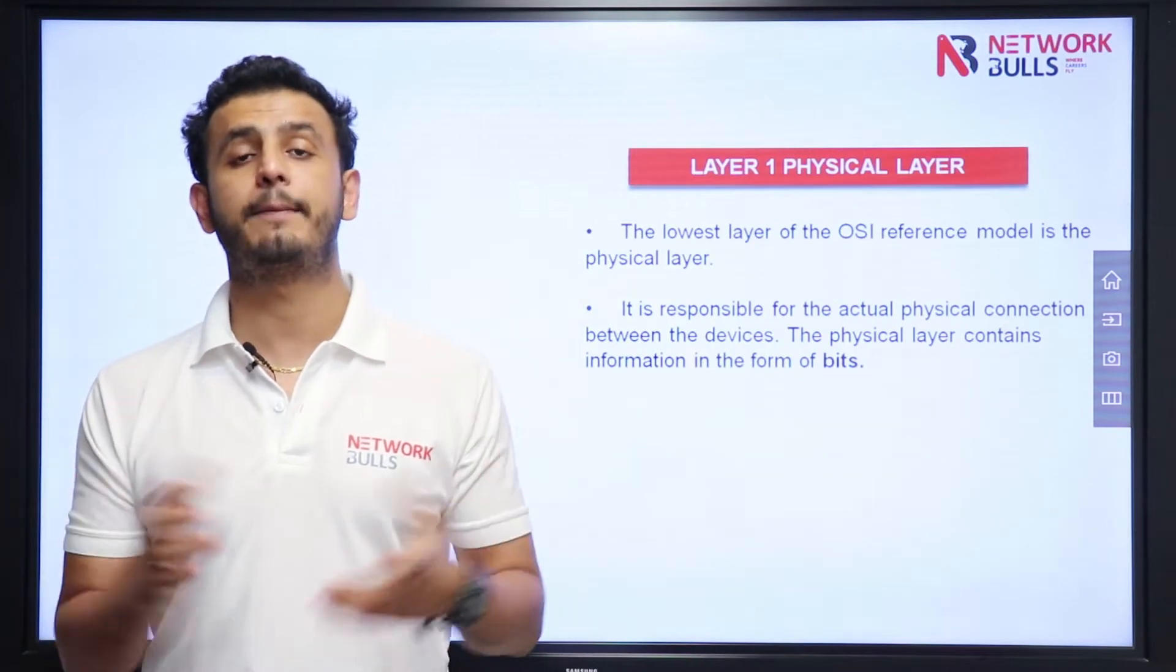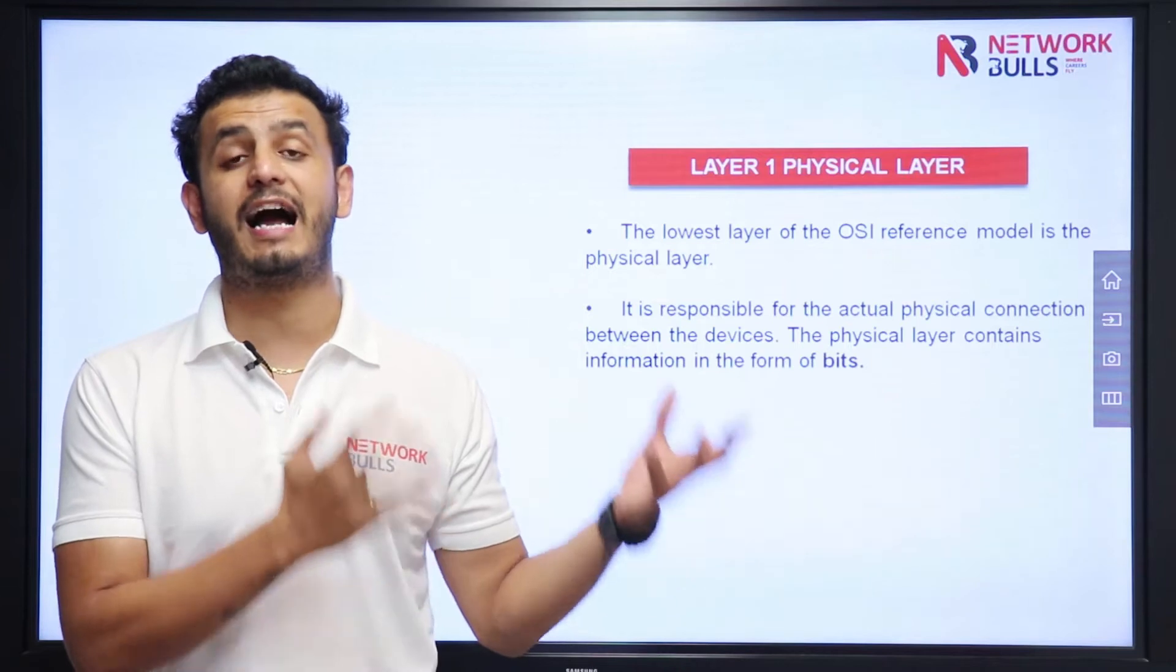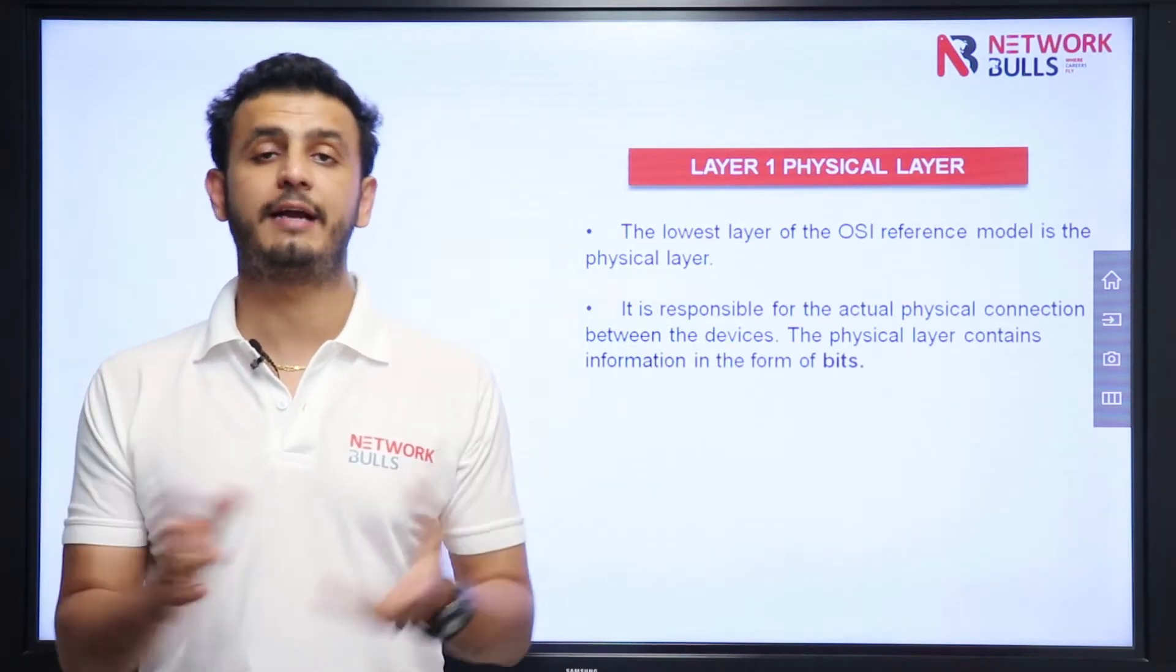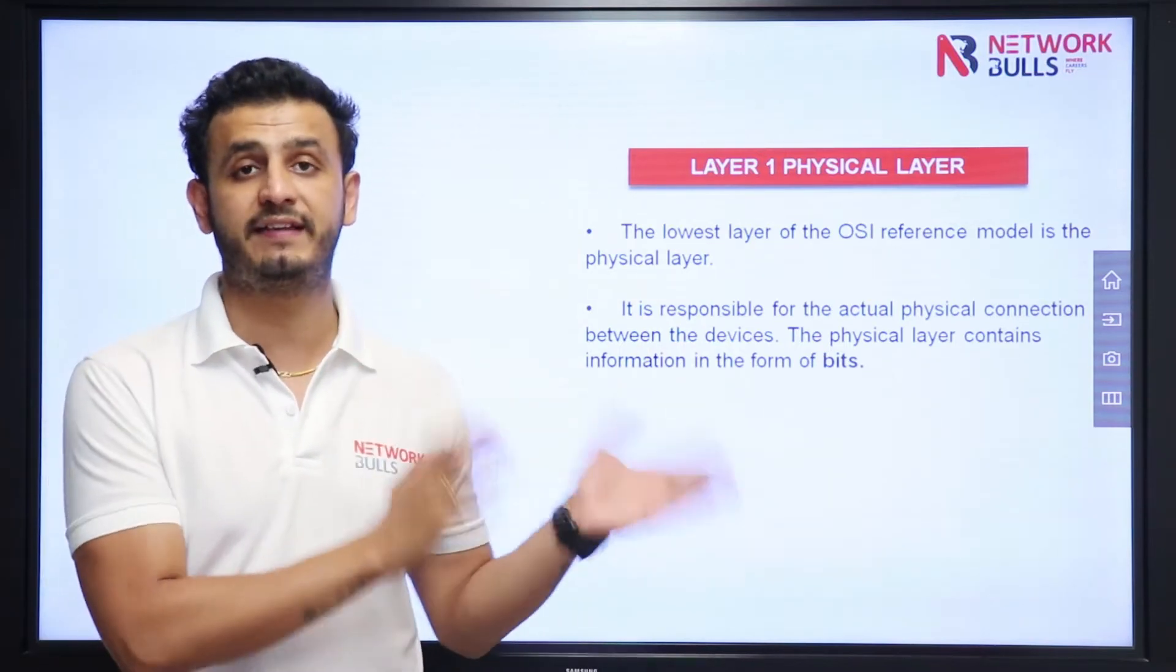Layer 4 Transport Layer adds port numbers, Layer 3 Network Layer adds IP addresses, and Layer 2 Data Link Layer adds MAC addresses. Now we have the lowest layer of the OSI model, called the Physical Layer.